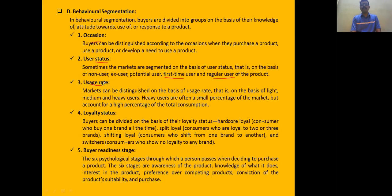Next is usage rate-based segmentation. Some customers purchase frequently, some purchase only in small quantities, and some purchase in high quantities — meaning they are a large community who use the product. Based on loyalty, customers are divided into hardcore loyalties — loyal to a single brand — split loyalties — loyal to more than one brand — switchers who have no loyalty at all, and shifting loyalties where loyalty changes from one brand to another.